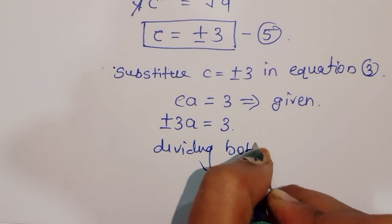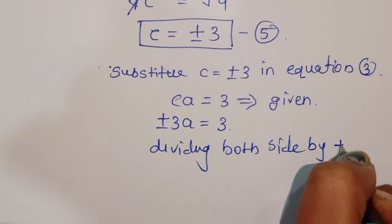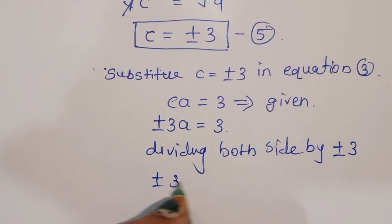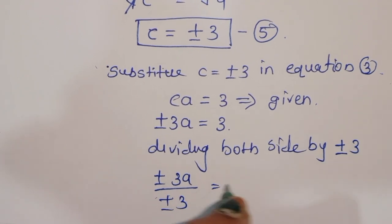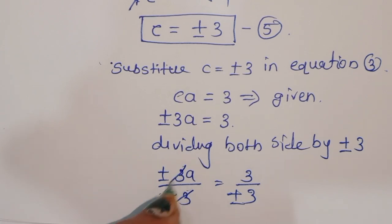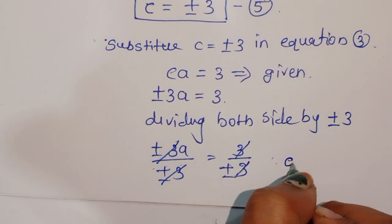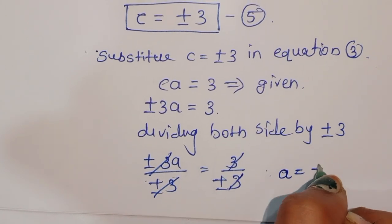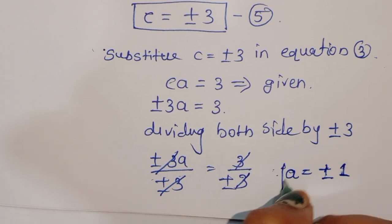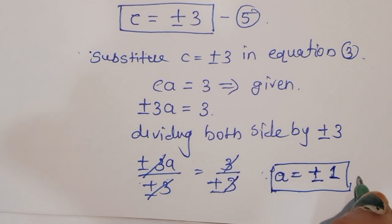Dividing both sides by plus or minus 3: plus or minus 3 times a divided by plus or minus 3 equals 3 divided by plus or minus 3. These cancel, and we get a is equal to plus or minus 1. This is the value of a — equation 6.